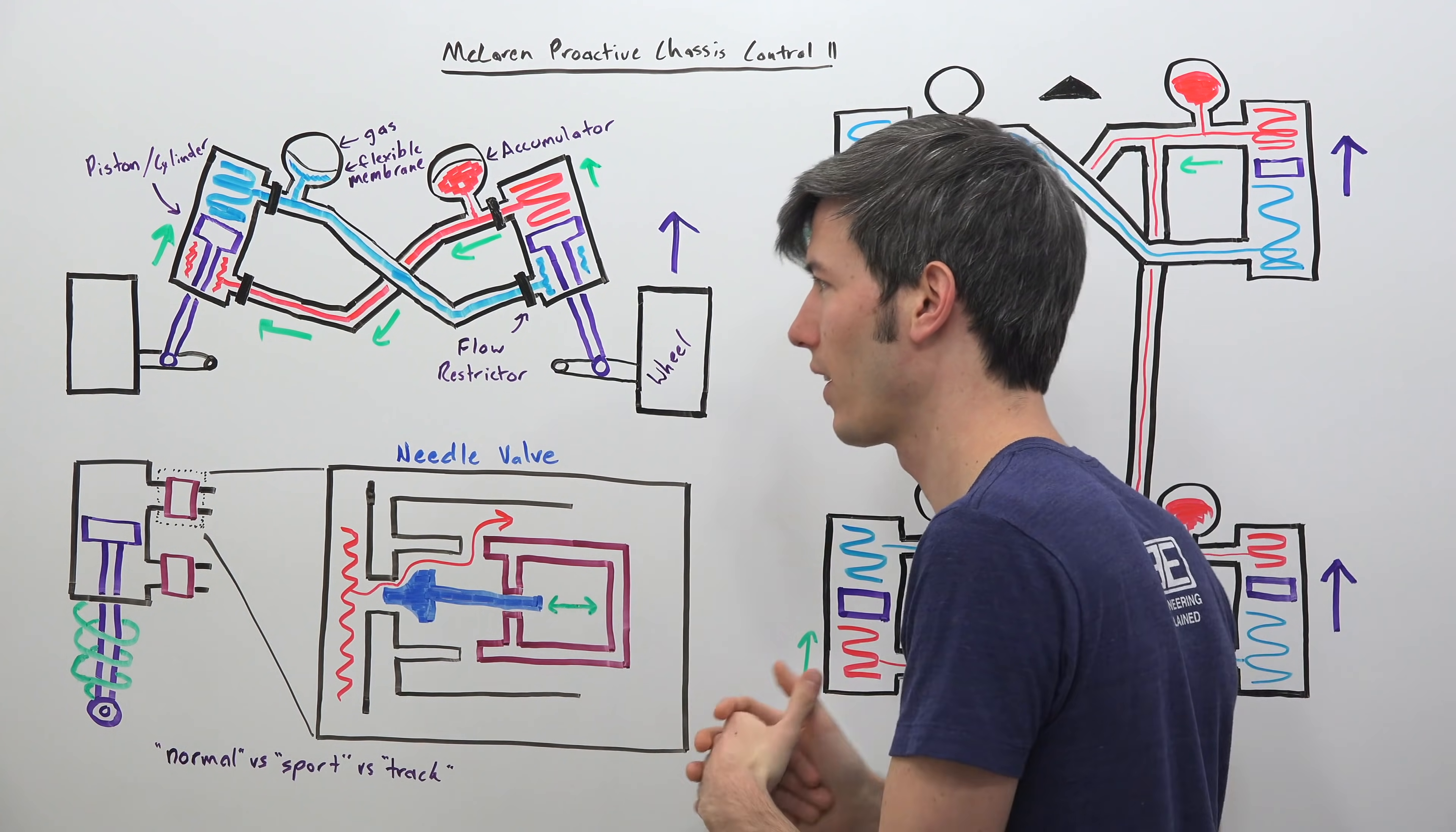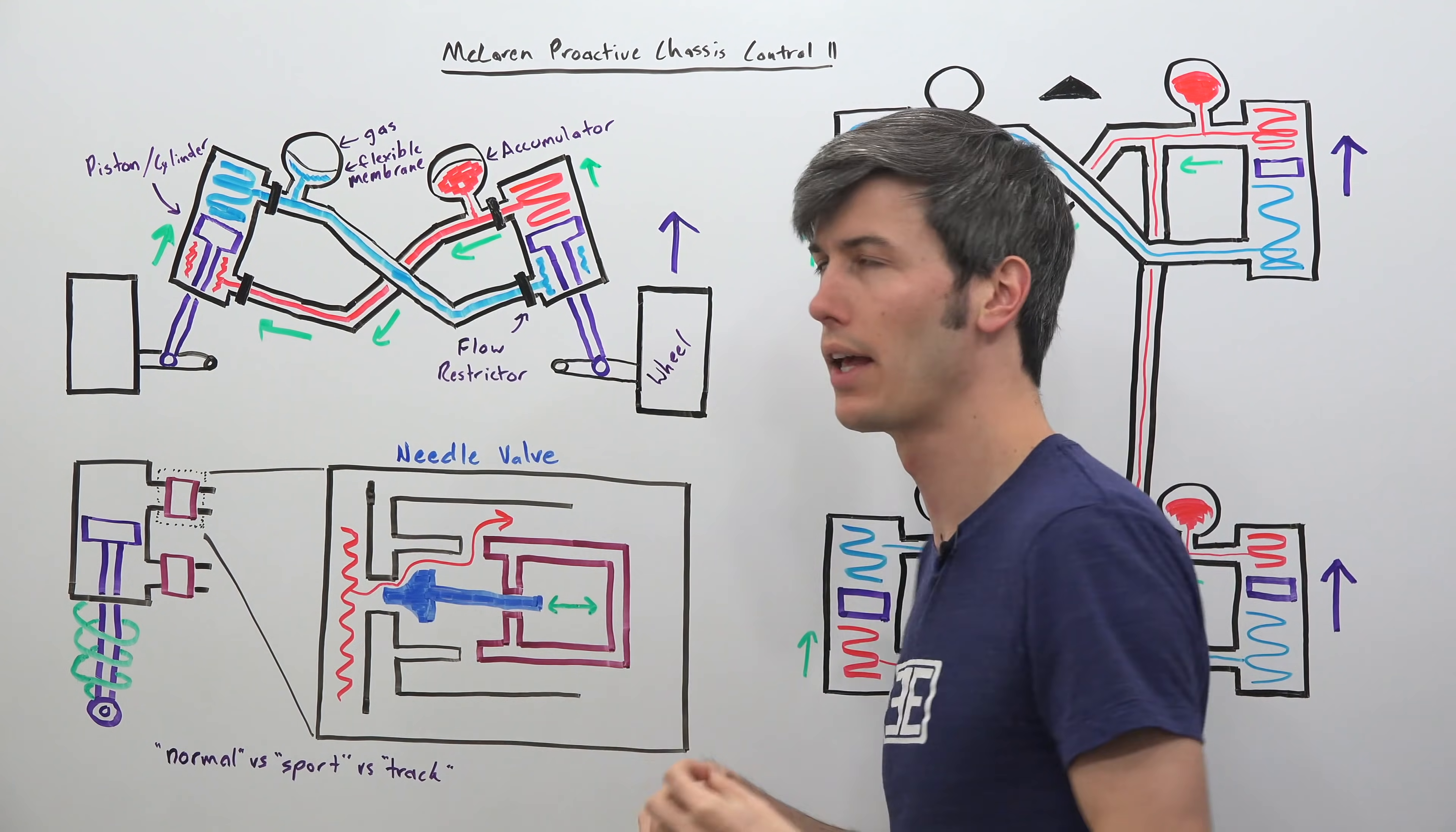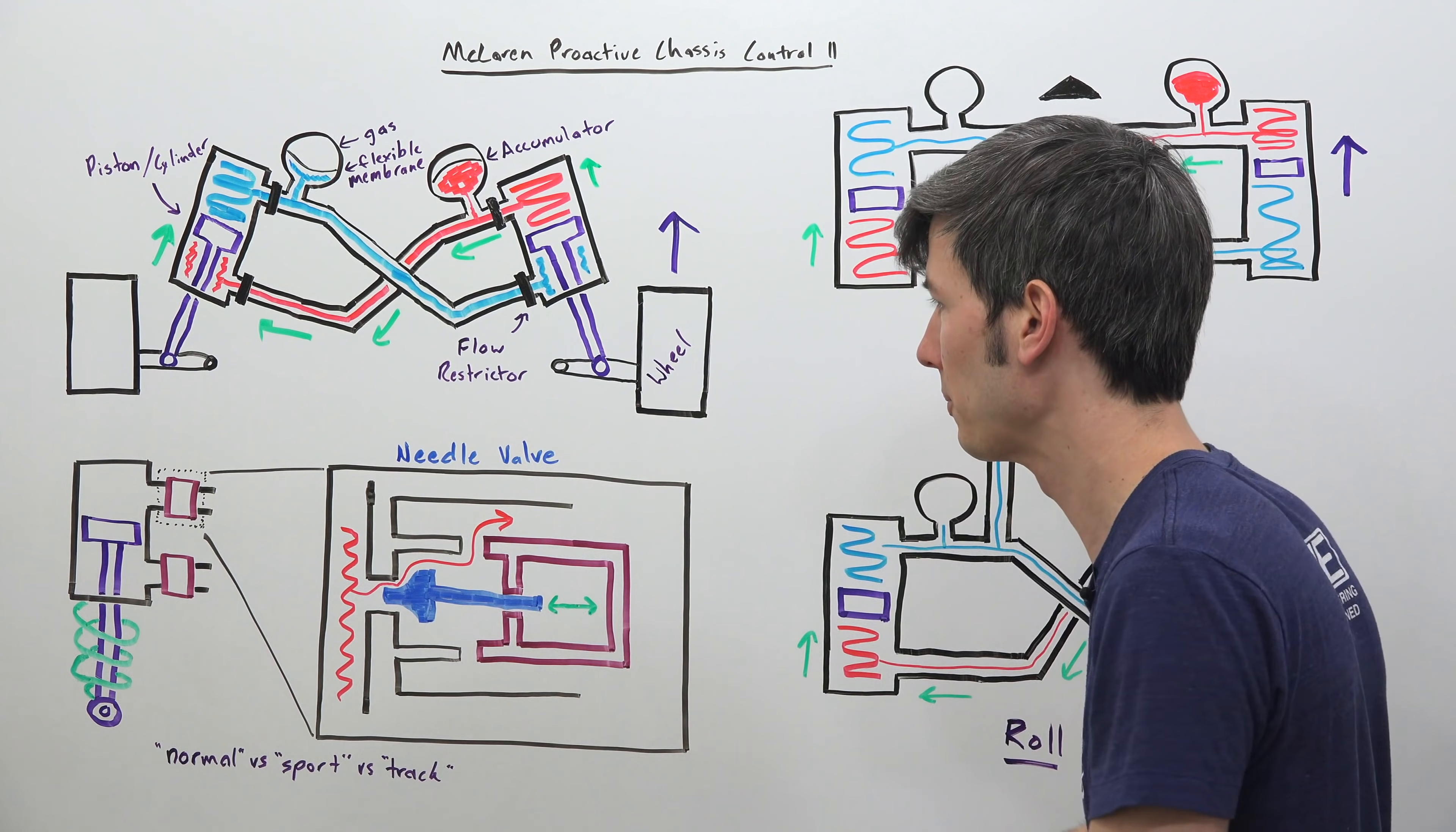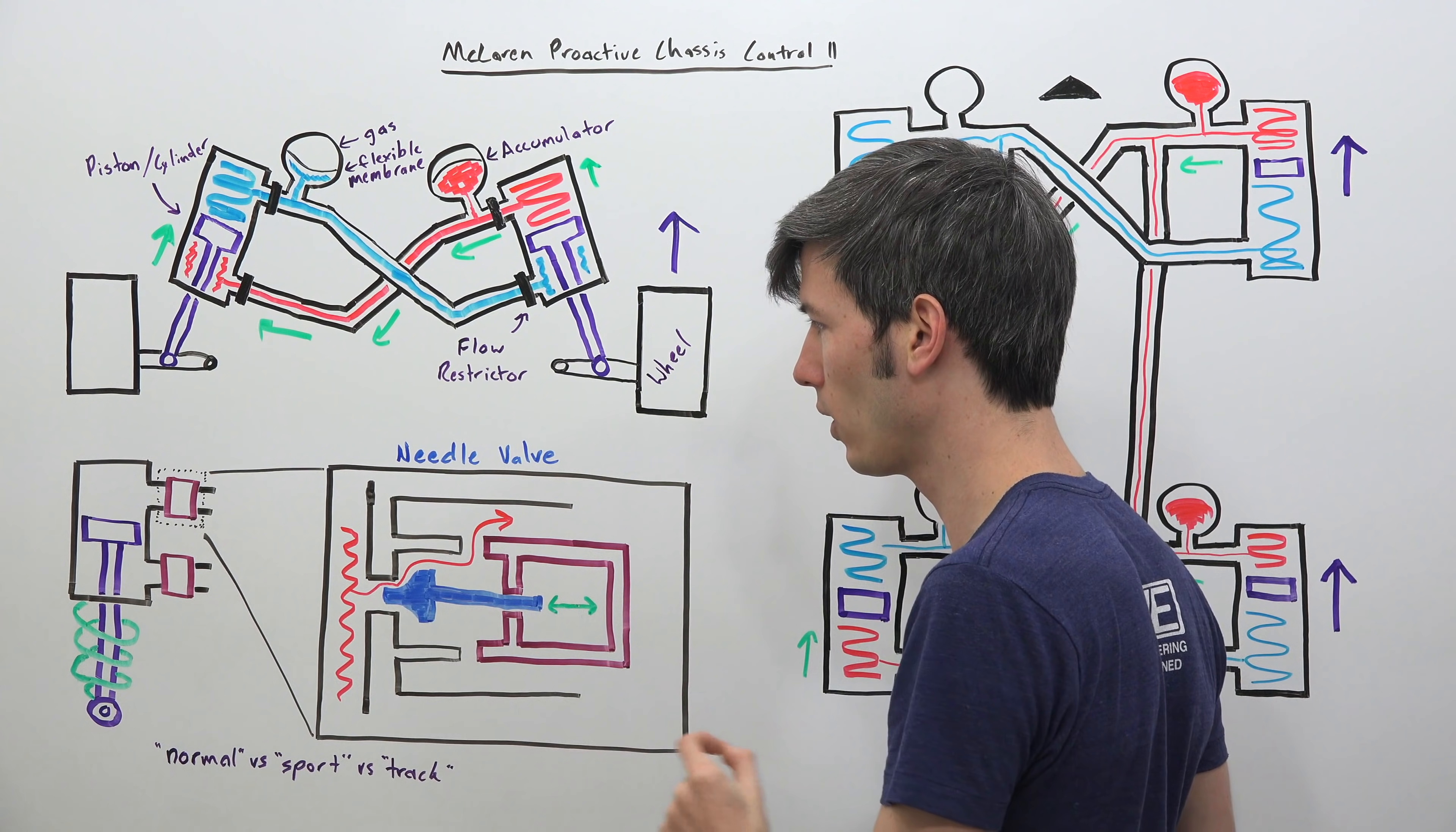And so by changing that rate you're changing the stiffness of the suspension. So if you have a very restricted flow restrictor then you're going to have a stiffer setup versus if you allow for easy flow between these cylinders then you're going to have a softer setup and you do this using a needle valve.